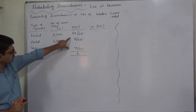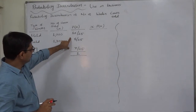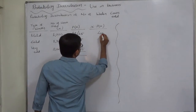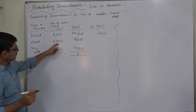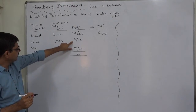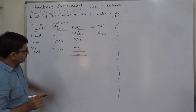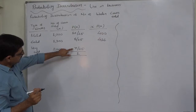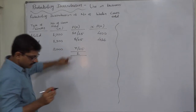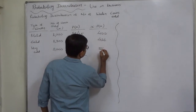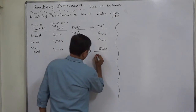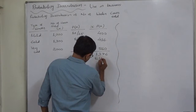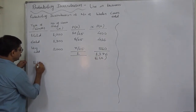We can now calculate the expected number of coats by multiplying each number of coats by its respective probability: 1000 into 10 = 10,000 divided by 25 = 400; 1300 multiplied by 8 = 10,400 divided by 25 = 416; 2000 multiplied by 7 = 14,000 divided by 25 = 560. Adding these together gives E(X), the expected number of coats sold, equal to 1376.